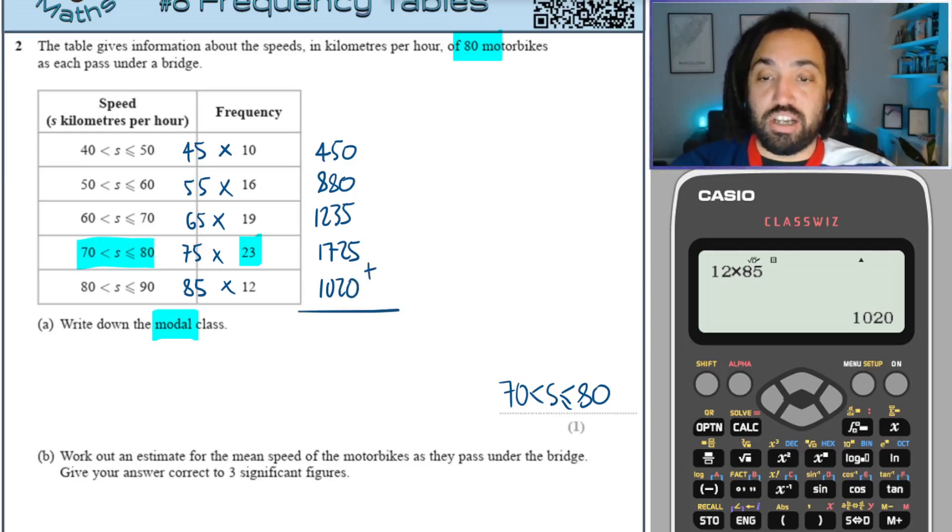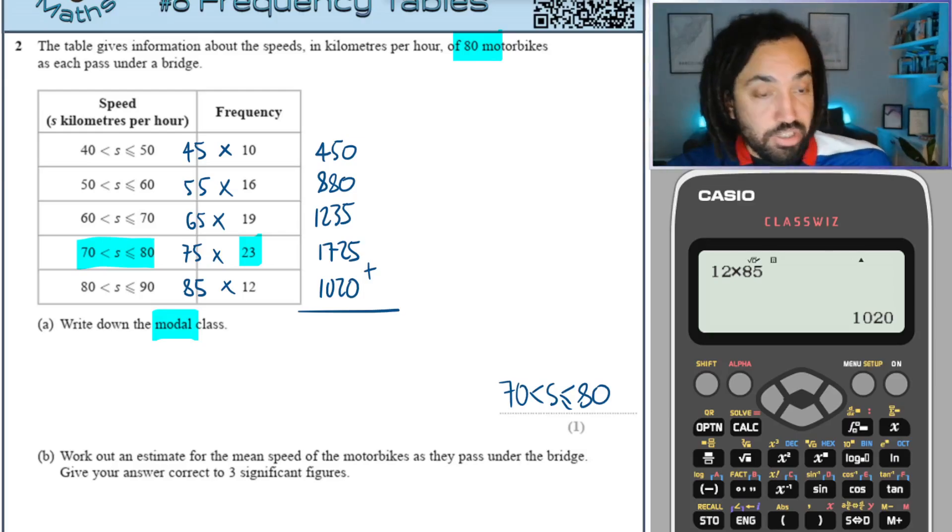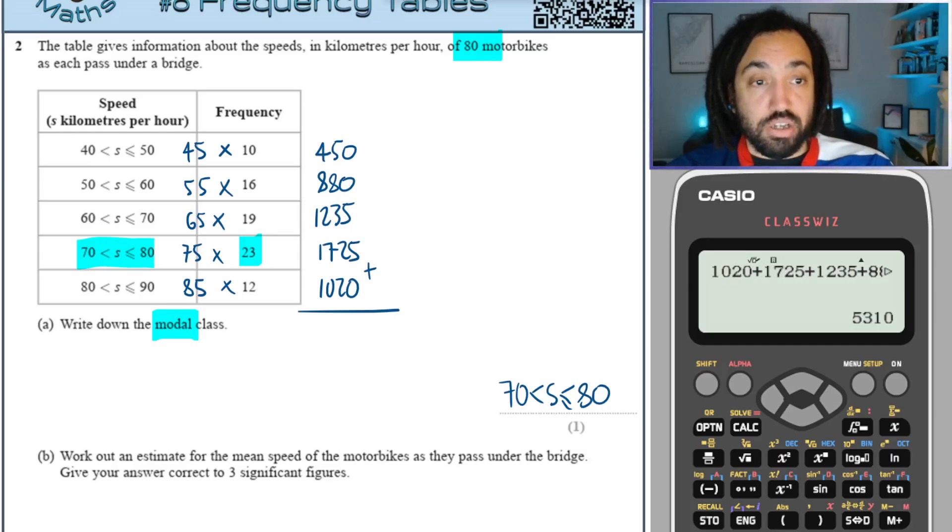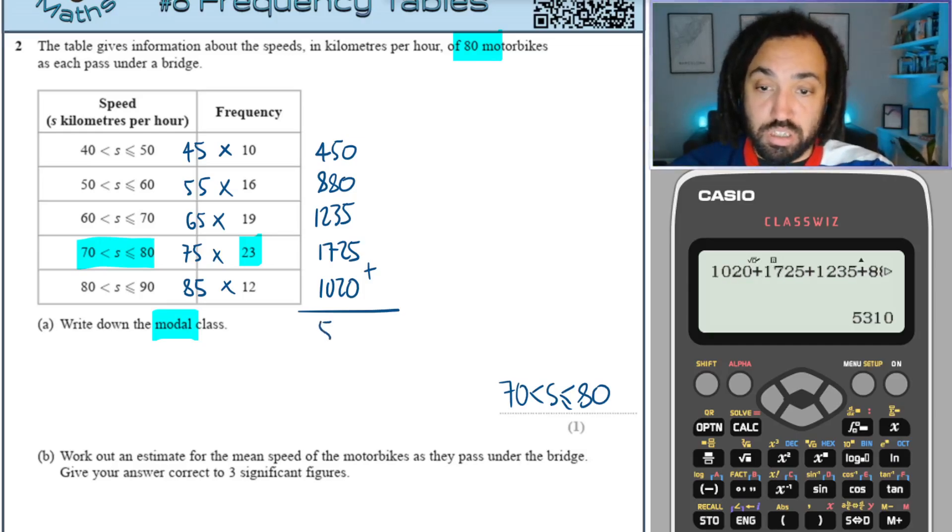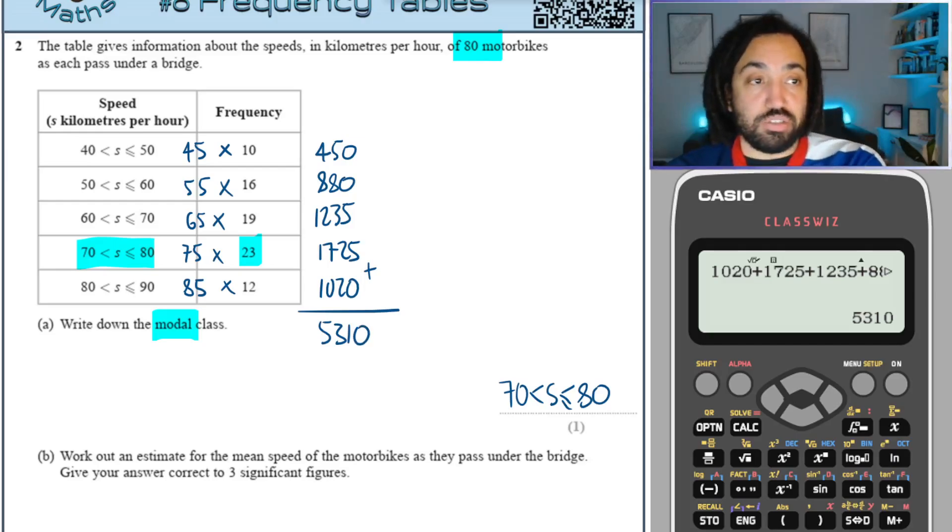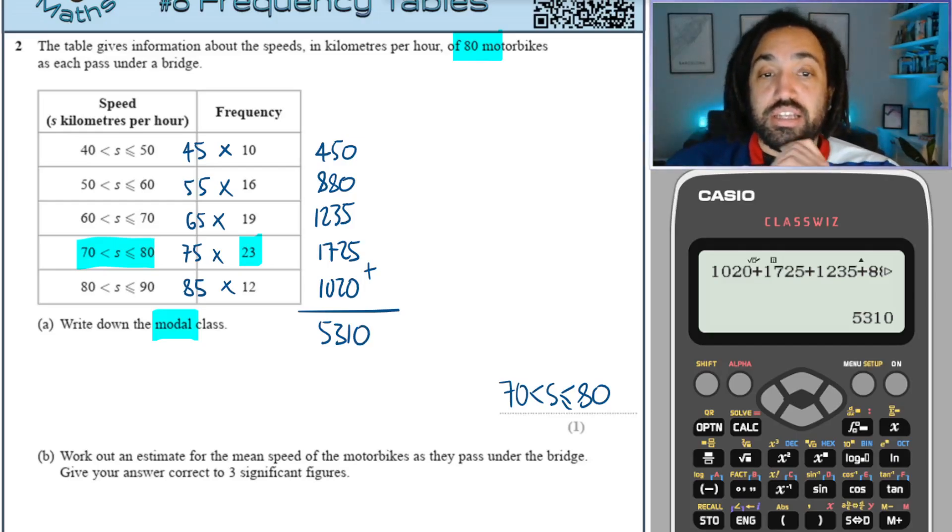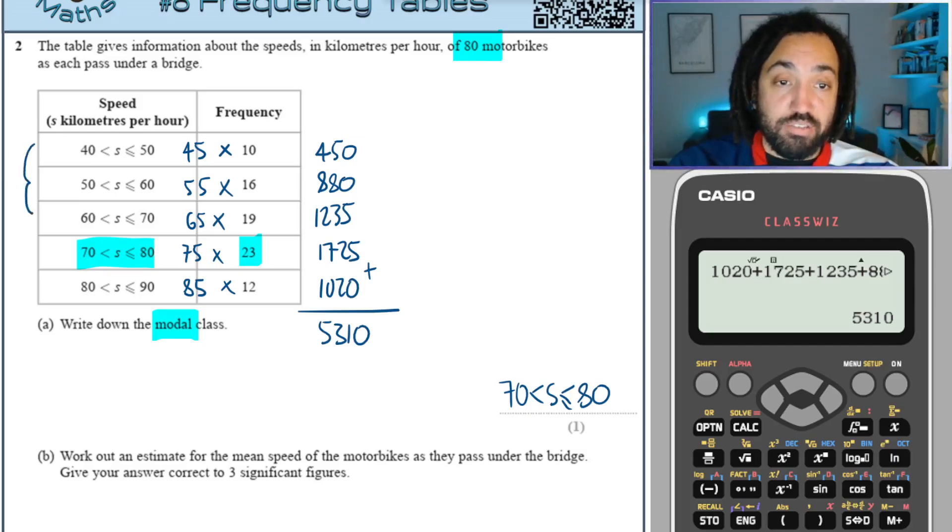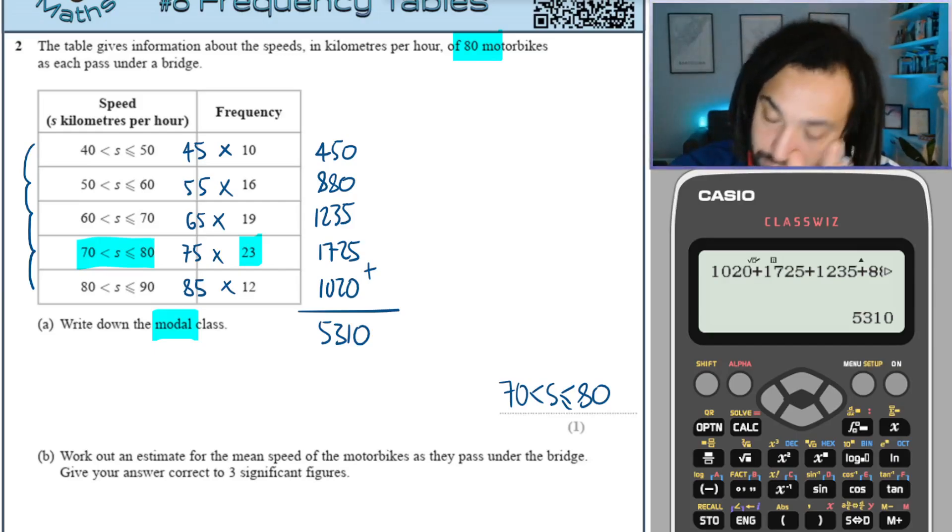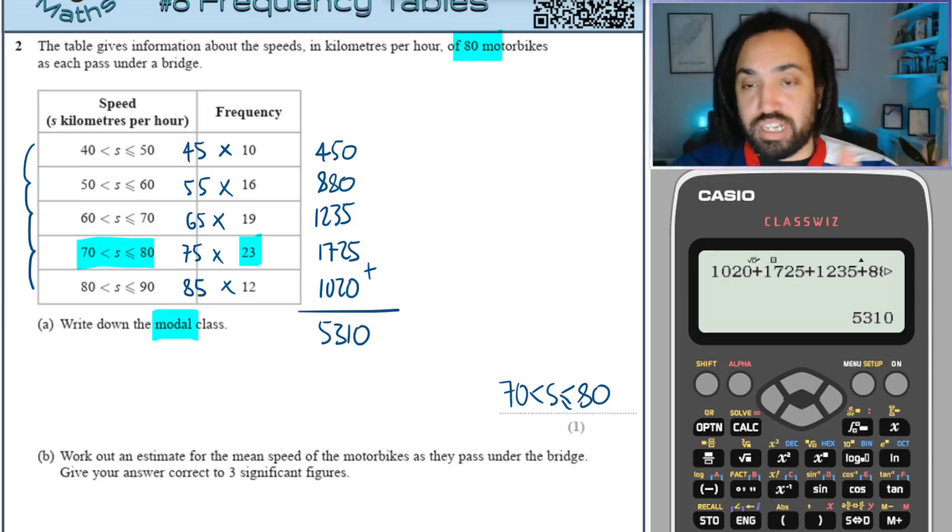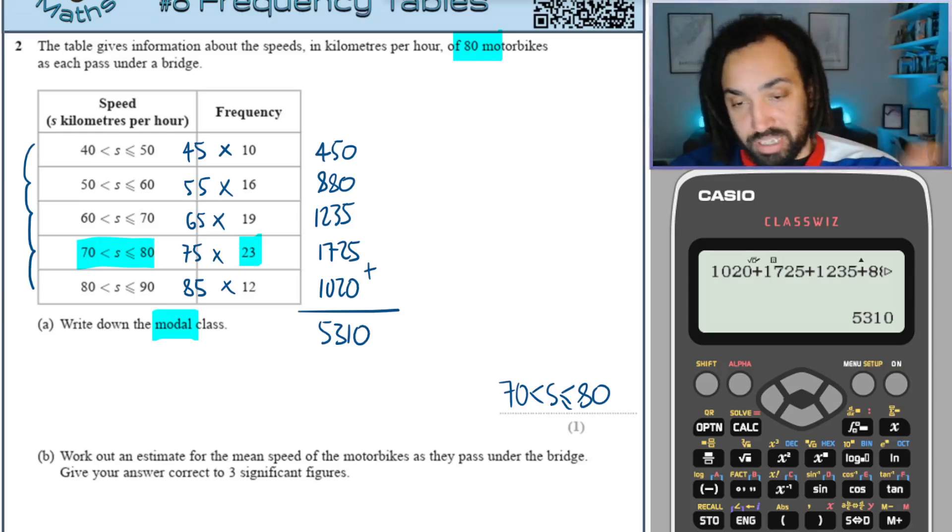Now we're going to add up all of these speeds to find out how much speed all of the motorbikes were traveling. Some people here will see that there are five rows and they will divide by five. That is not right. That gives us a thousand miles an hour, and no motorbike is going a thousand miles an hour.